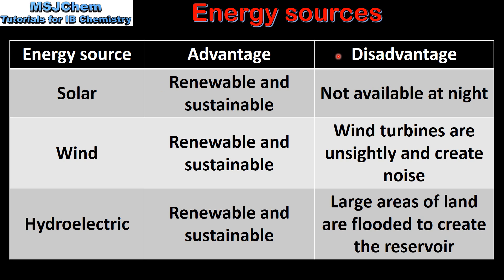Next we look at the disadvantages of each energy source. The main disadvantage of solar is that it's not available at night. Wind turbines are unsightly and create noise. In hydroelectric, large areas of land are flooded to create the reservoir behind the dam.